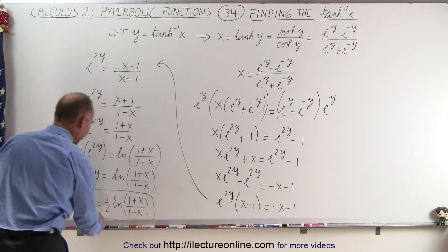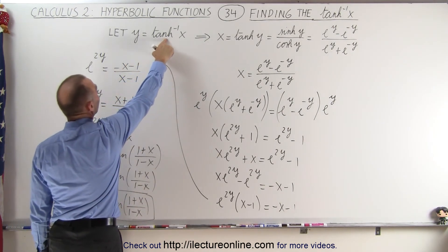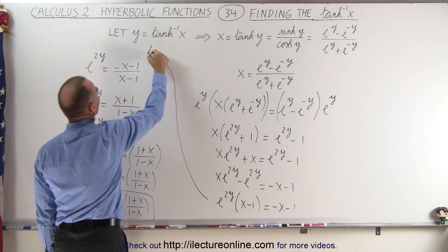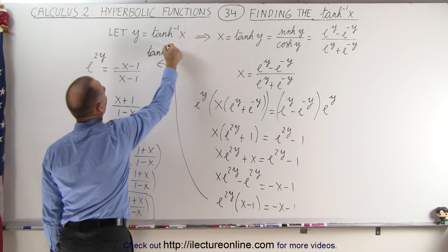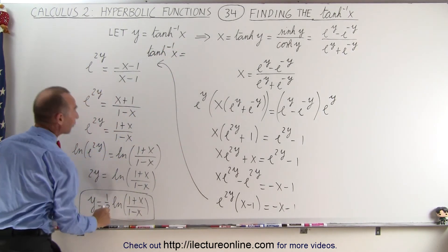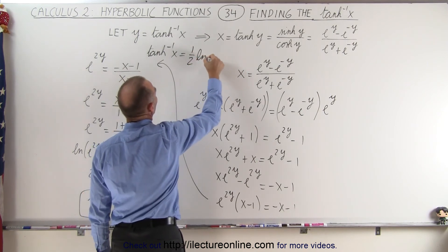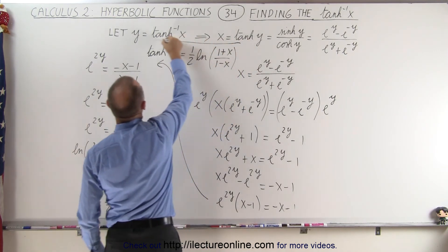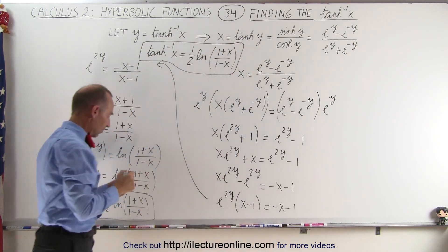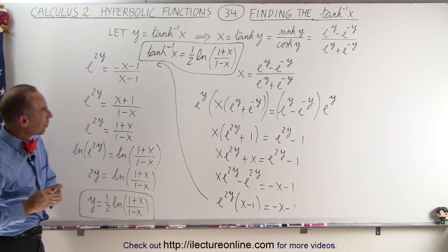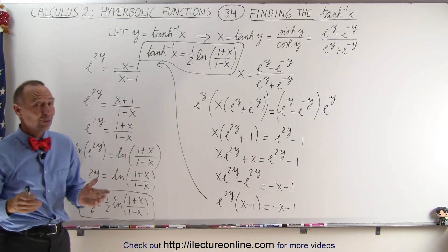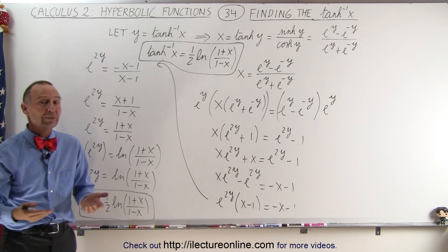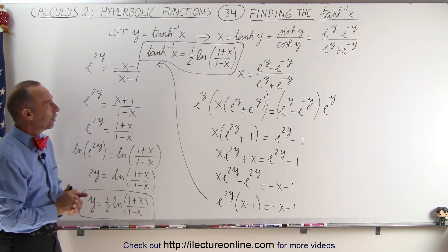Since y equals the inverse hyperbolic tangent of x, and y equals this expression, we can conclude that the inverse hyperbolic tangent of x equals one half times the natural log of 1 plus x divided by 1 minus x. This is our new expression for the inverse hyperbolic tangent of x. Once we have this expression, we can also find the derivative and the equivalent integral, so stay tuned.